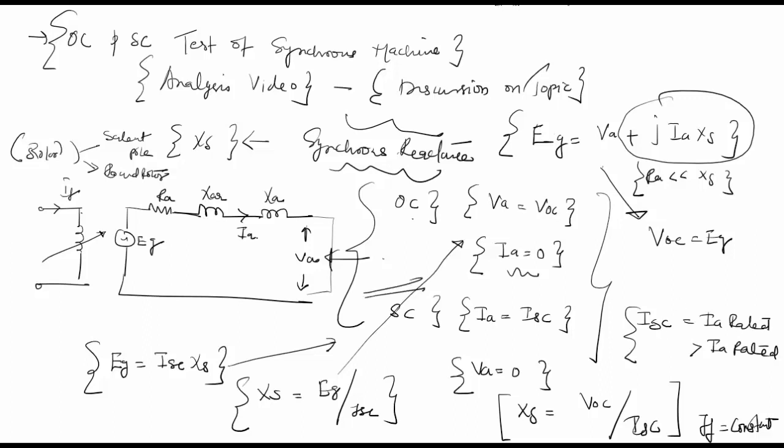It is seen that during the open circuit since IA is equal to zero, the losses happening are mainly core loss and friction and windage loss only.